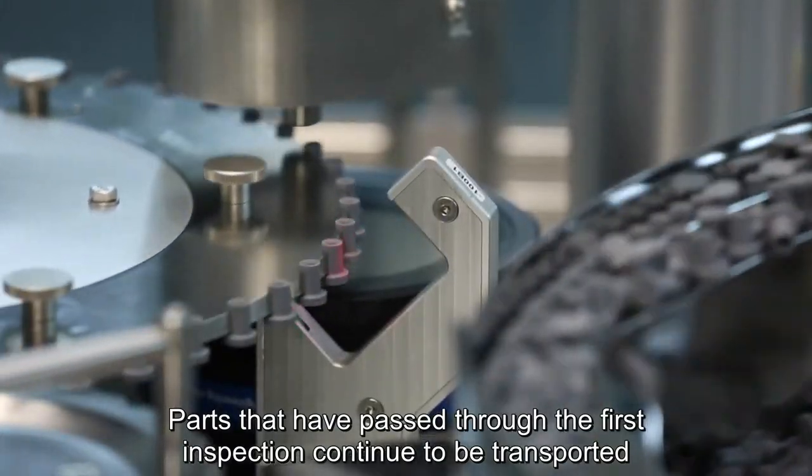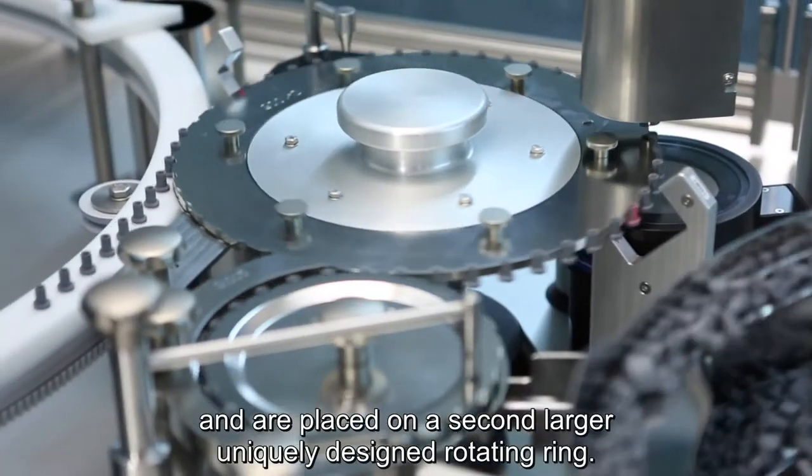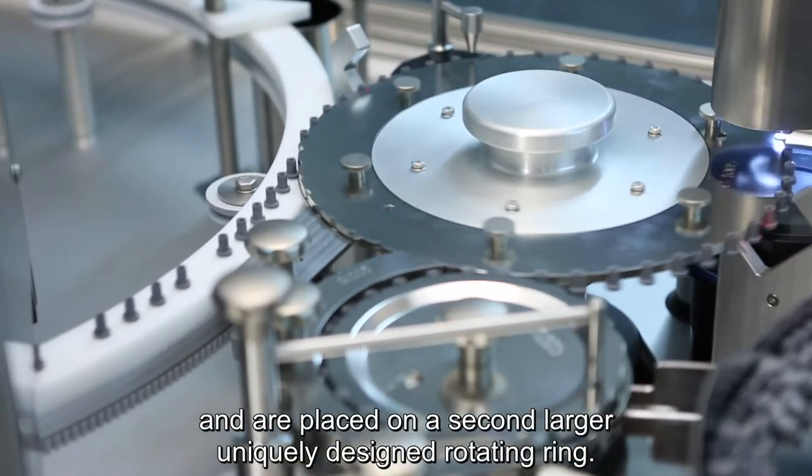Parts that have passed through the first inspection station continue to be transported and are placed on a second, larger, uniquely designed rotating ring.